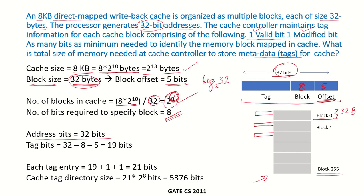The total address size is 32 bits. Out of these, 5 bits are used to specify the offset within a block, and 8 bits are for the block number. So the number of tag bits would be 32 minus 8 minus 5, which equals 19 bits. Apart from these tag bits, there is 1 bit for the valid and 1 bit for the modified bit, making the total 21 bits per block. With 2 to the power of 8 blocks, each having a 21-bit tag entry, the total number of bits required for the tag directory is 21 multiplied by 2 to the power of 8.